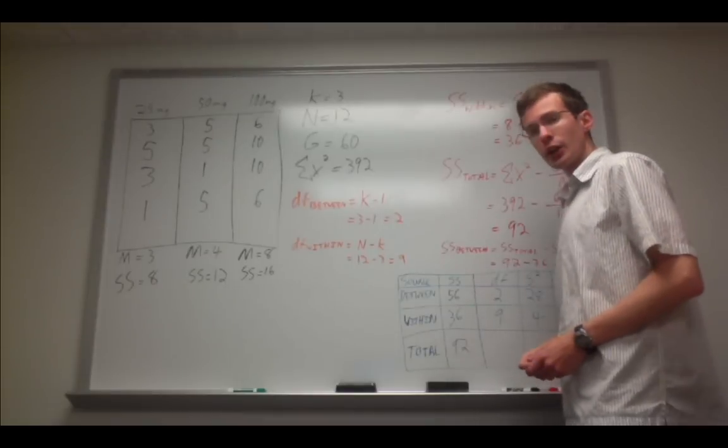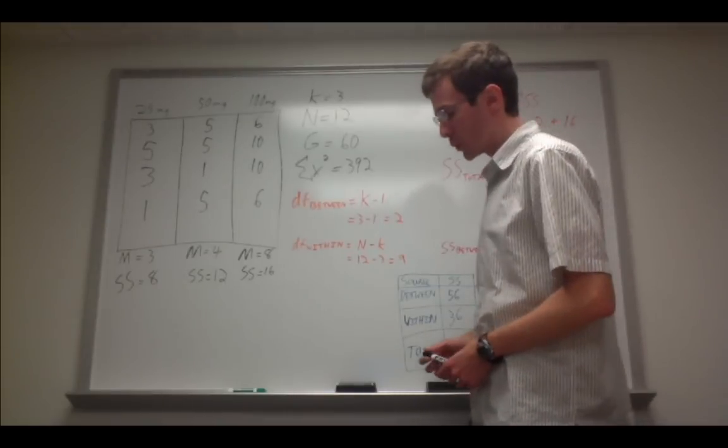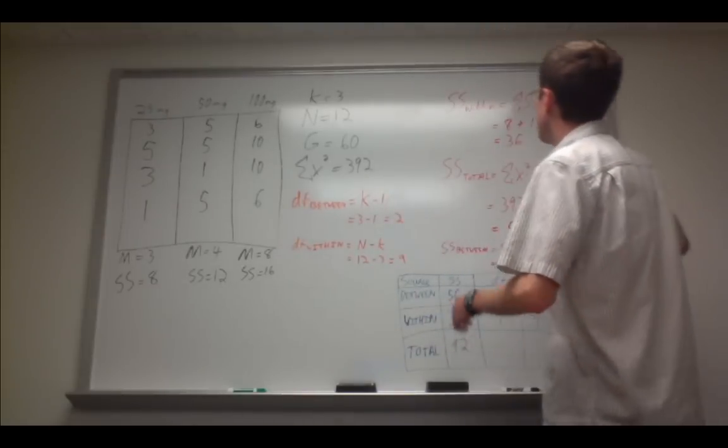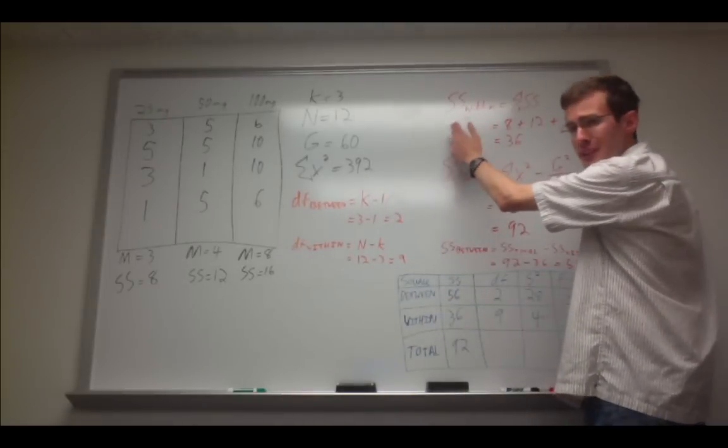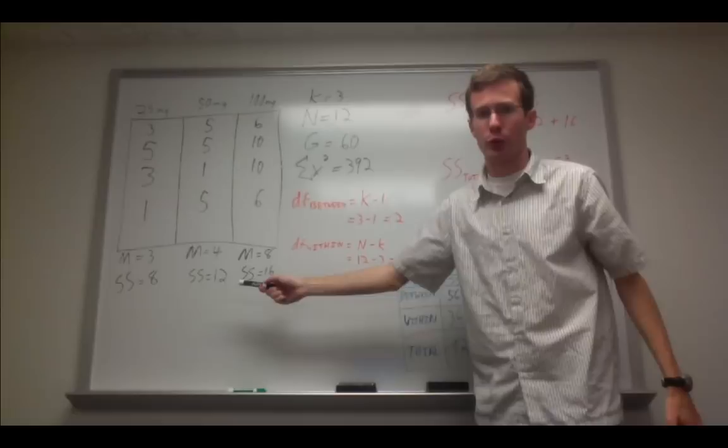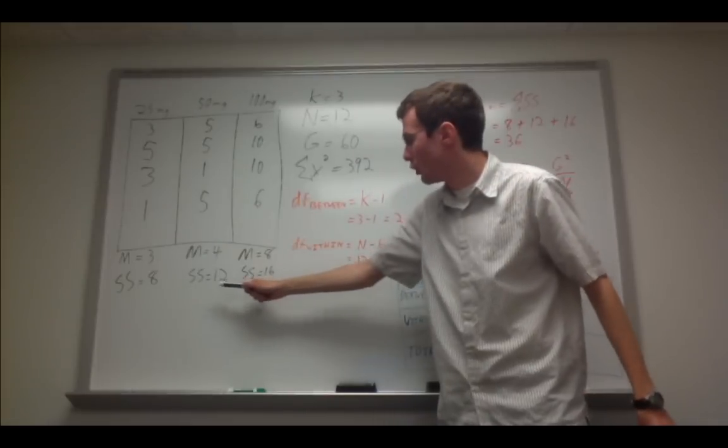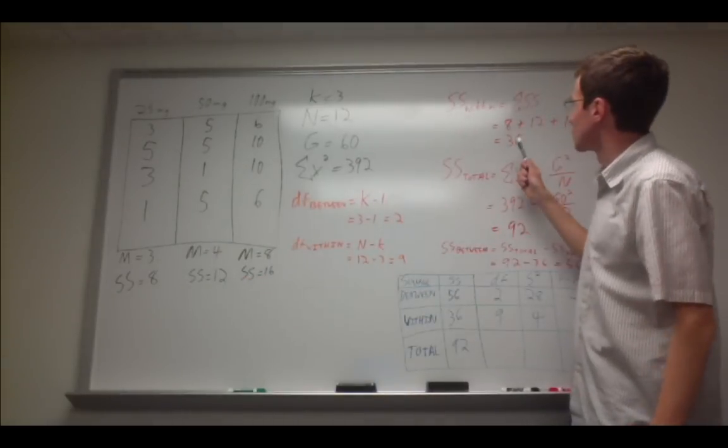Last thing we need to do is calculate the sums of squares both within, between, and total. The sums of squares within is pretty easy. We simply take the sums of squares across all the groups and add them together. So, 8 plus 12 plus 16 equals 36.